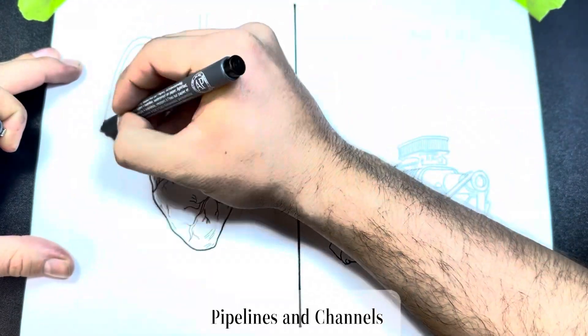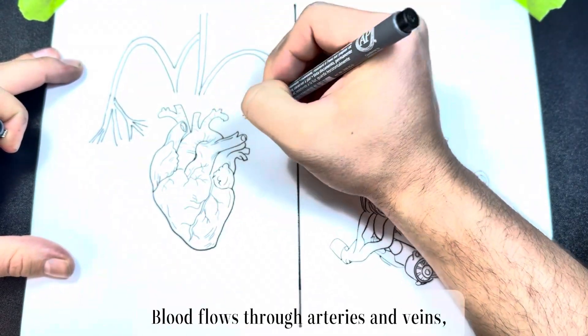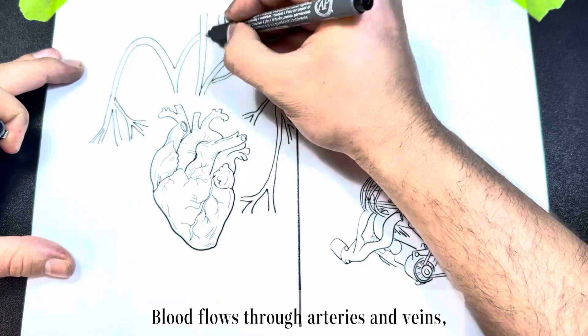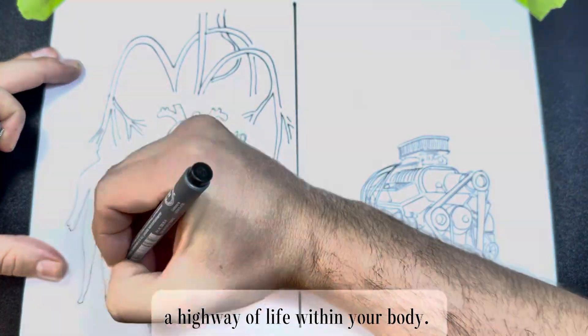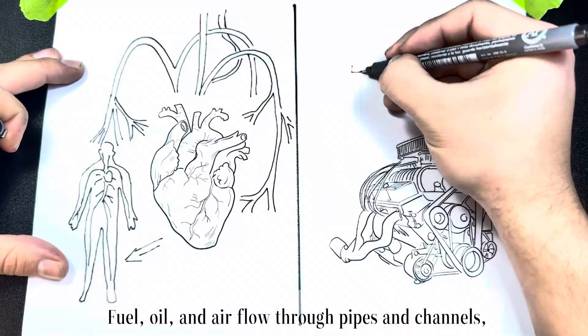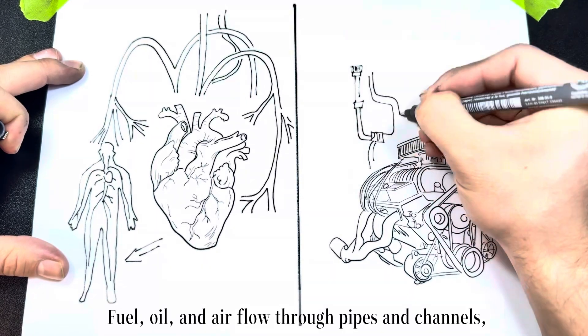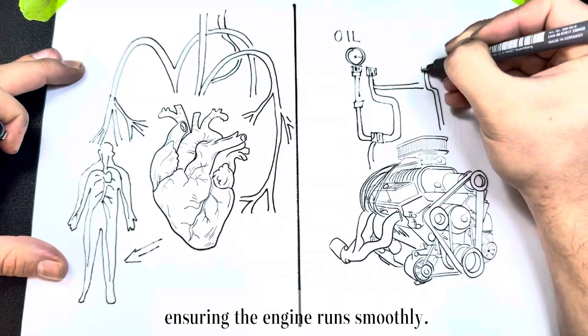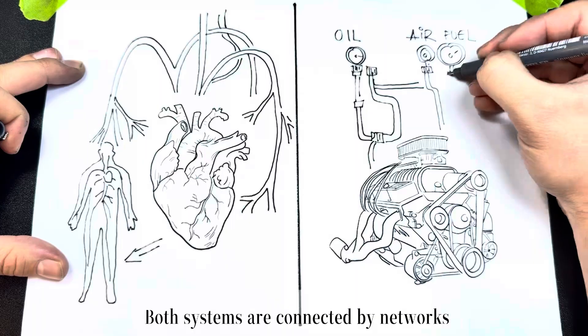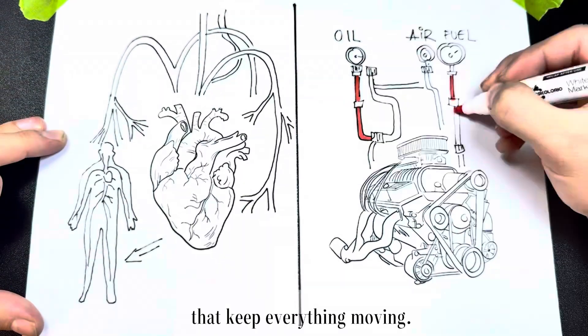Pipelines and channels: The heart pumps blood through arteries and veins, a highway of life within your body. The engine moves fuel, oil, and air through pipes and channels, ensuring it runs smoothly. Both systems are connected by networks that keep everything moving.